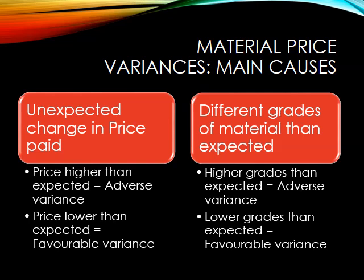Alternatively we might decide to use a different grade of material than was expected. If we are going to be using a higher grade than expected that will probably give us an adverse variance, because we would likely be paying a higher price per unit of material than we had expected or budgeted for. Similarly if we are using lower grades of material than expected that should give us a favourable variance, as we would expect to buy lower grades of material at a lower price per unit of material.